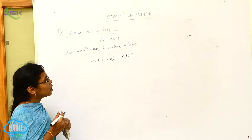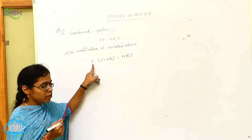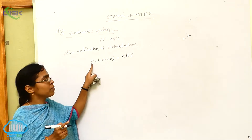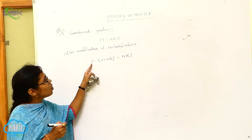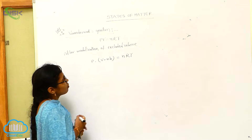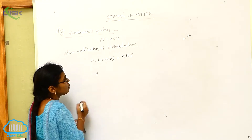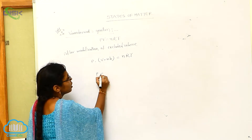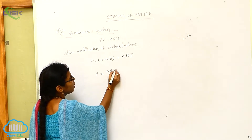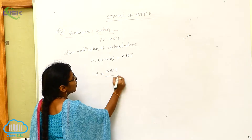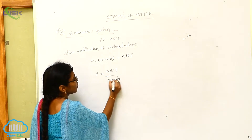Now our work here is modifying the pressure as well. Before the modification of pressure, normally P is equal to NRT by V minus NB.